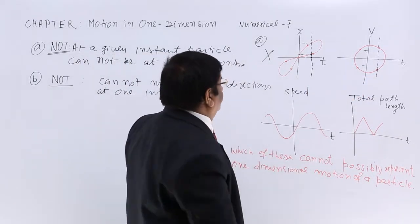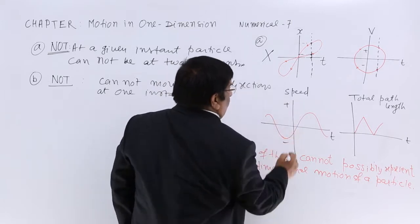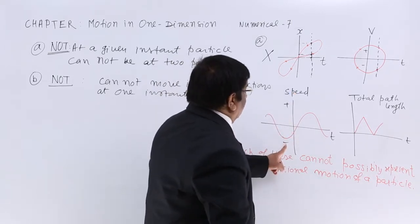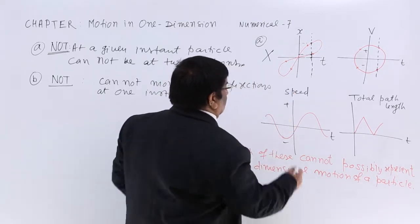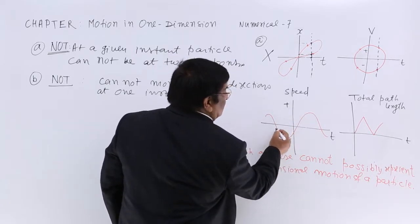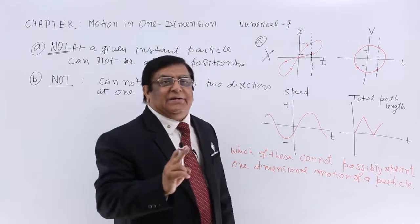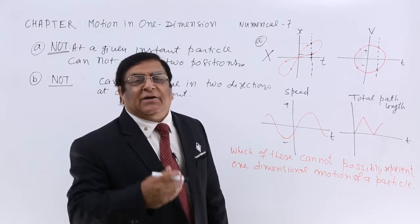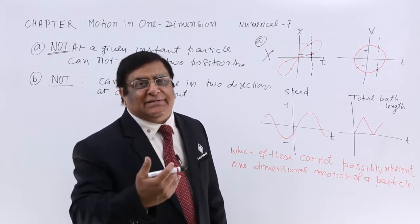Third, speed and time. Speed never has a negative sign. And this graph shows plus and minus both. So speed is always positive, it is never negative. It goes on increasing or decreasing.